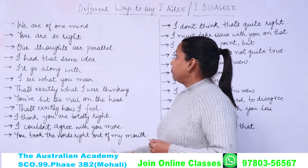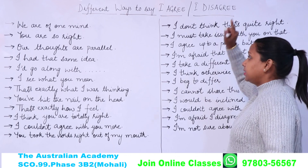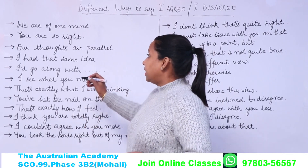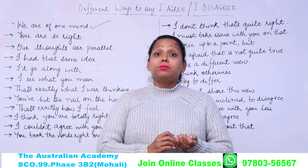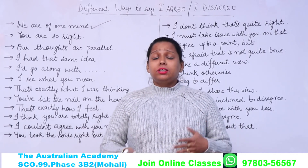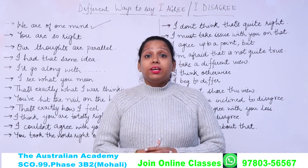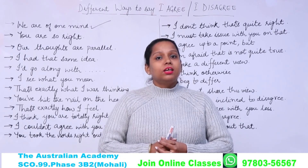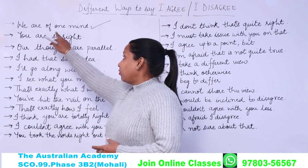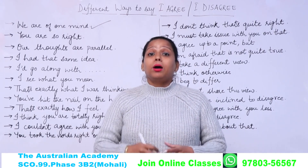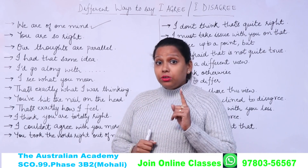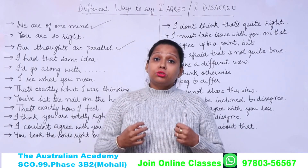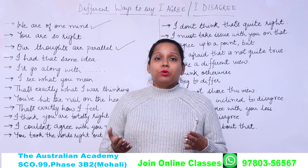There are different ways to say 'I agree' and 'I disagree.' Starting with agreement, the first phrase is 'we are of one mind.' When a question is asked about a community, society, or people's opinion, instead of saying 'that society agrees upon that,' we can say 'we are of one mind' — meaning that community all agrees upon the thing. Another similar phrase is 'our thoughts are parallel,' meaning we all agree with the same thing.